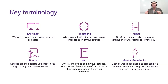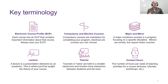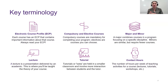A course coordinator — also known as the lecturer — designs and plans each course and is often the main lecturer. You can find their contact details on your ECP. Your electronic course profile, or ECP, contains important information about the course. Always read your ECP — it tells you when exams are, when assessments are due, what you'll be doing week to week, and what books you should be reading.